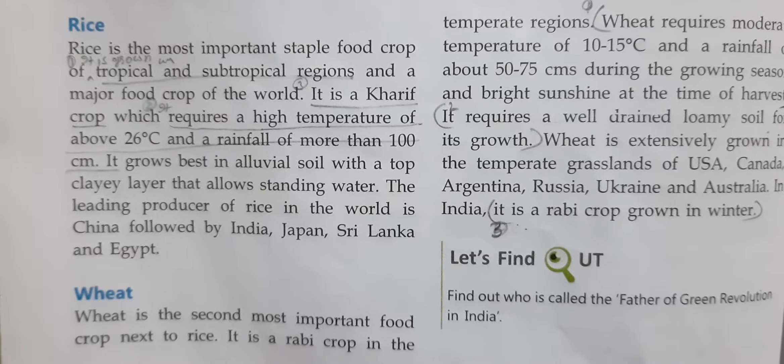Next is jute. It is known as the golden fiber because of its color. India also earns valuable foreign exchange by the export of jute goods. It requires high temperatures, high rainfall, and alluvial soil for its growth. It is a crop of subtropical and tropical regions. The two leading producers of jute in the world are India and Bangladesh.